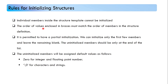The order of values enclosed in braces must match the order of members in the structure definition. For example, suppose we have a structure called 'student' inside which we have student name, roll number, and marks. When we are initializing the values, we have to initialize them in the same order — first the name, then roll number, then marks. We need to follow that order.